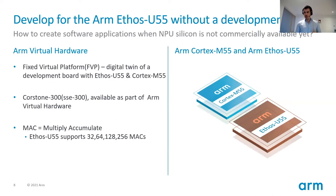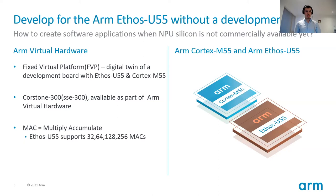The Ethos U55 is a new product delivering impressive performance, and you don't even need a development board to start using it. The way to run an application without a physical board is to use what we call a Fixed Virtual Platform, or FVP. The FVP is a digital twin of a development board loaded with the Ethos U55 micro NPU and a Cortex-M55 CPU — a software model that behaves exactly like real silicon, allowing you to run and test your application. We use the CoreStone 300 reference design, also known as the SSE-300 subsystem.